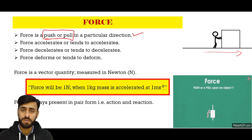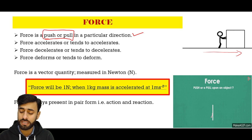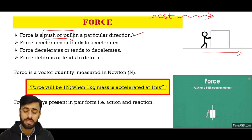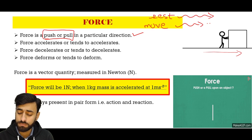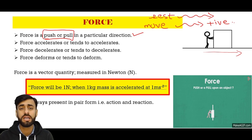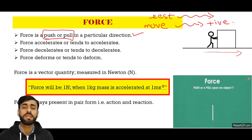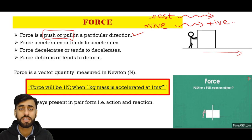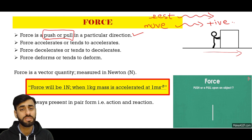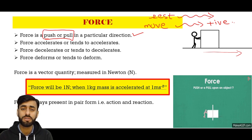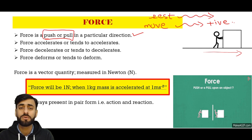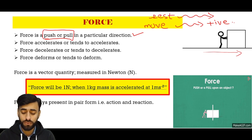When we apply this push or pull to an object, obviously if the object is at rest it will start to move, and if it is already moving its speed or velocity will increase. If an object is moving and we want to stop it, its velocity or speed will start to decrease. So the next definition: when a force is exerted on an object at rest, its velocity changes — and a change in velocity is called acceleration. So force accelerates or tends to accelerate.